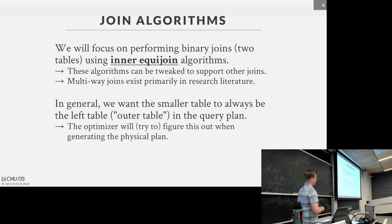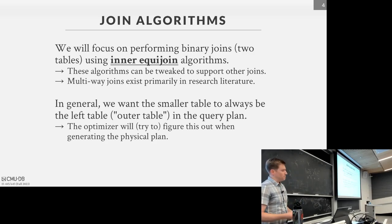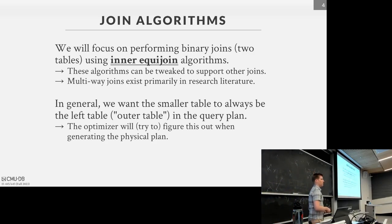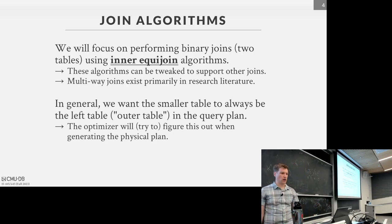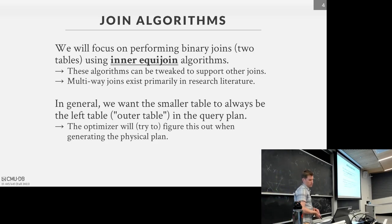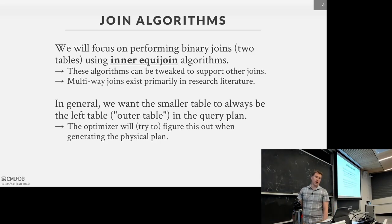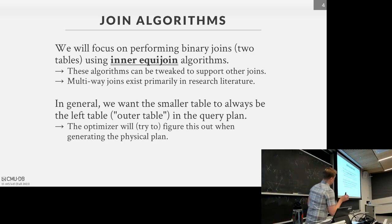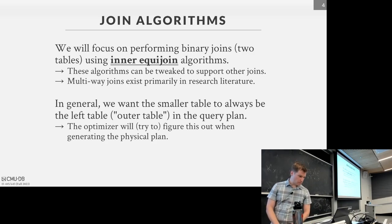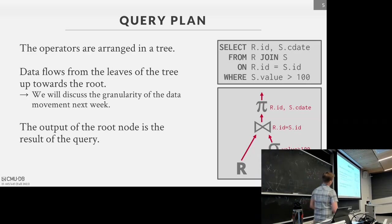These are binary joins where we're only worrying about two relations. Multiway joins exist mostly in research literature. SQL Server added support for multiway joins around 1998 and then decided it was a terrible idea — performance was unpredictable — and ripped it out a couple years later. As far as we know, Relational AI is the only system still playing with multiway joins. We also have some terminology: we want the smaller table to be the left or outer table, which will start to make sense as we discuss the algorithms.